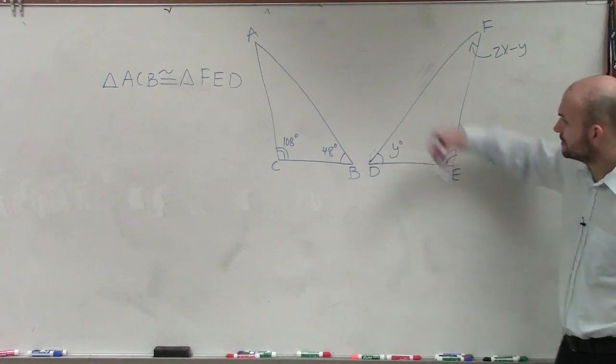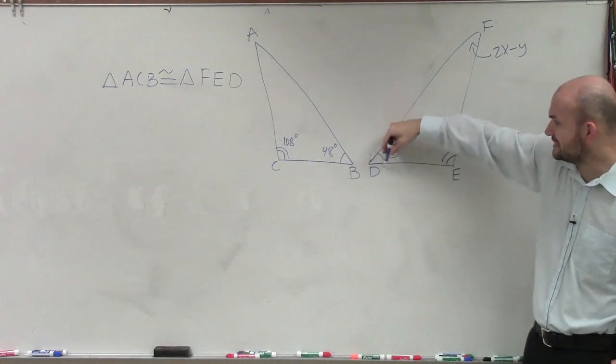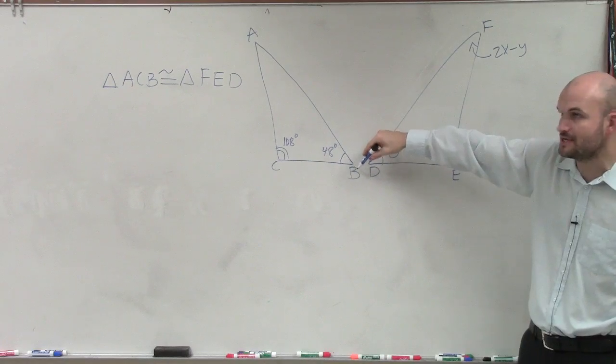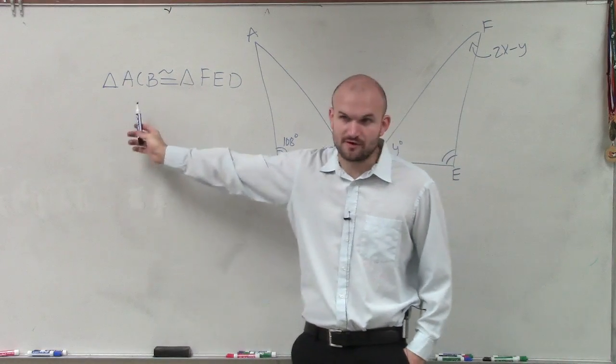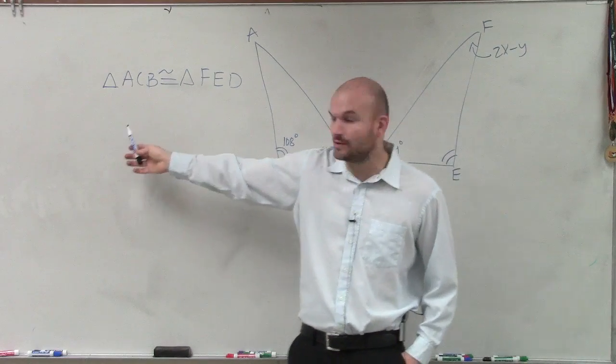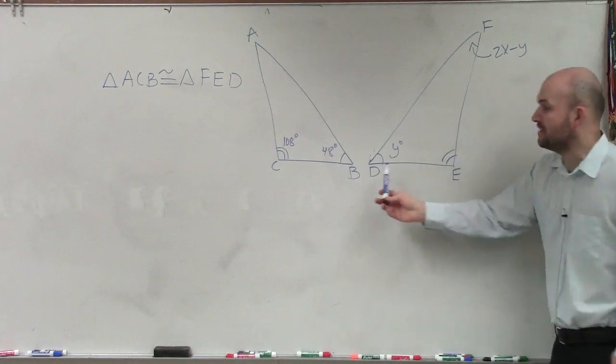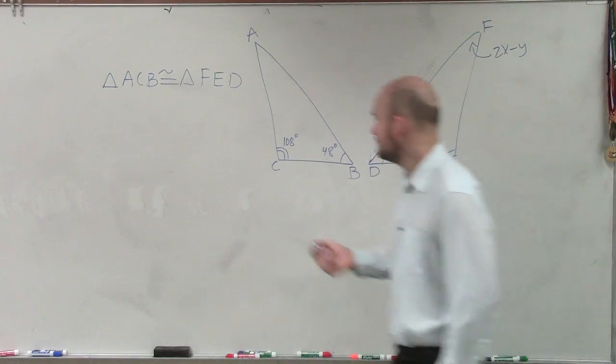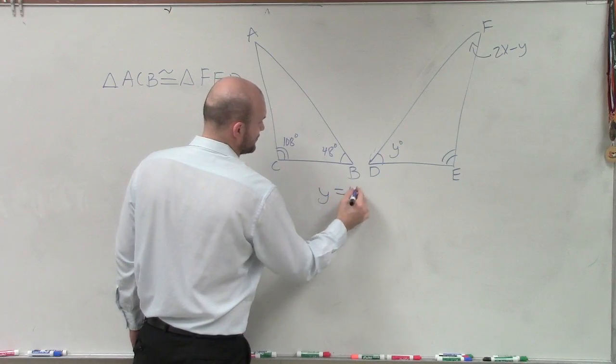So this angle has to be equal to that angle, right? D is corresponding to B. They're both in the last of our relationships and how we name our triangles. And since they are congruent, we know that D is equal to B. So therefore, I can simply just say y equals 48 degrees.